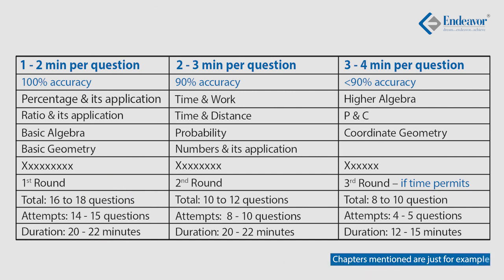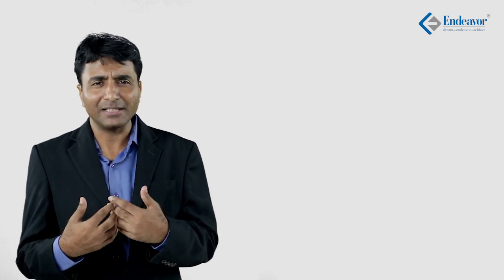Prepare a table where the first column lists all chapters and questions where you have been consistently scoring in your last 5 mocks and are able to get them correct within 1 to 2 minutes. For example, areas like percentage and its applications, ratio and its applications, averages, basic geometry, and mensuration — most students get these correct within 1 to 2 minutes. These chapters are generally classified as easy. You will find approximately 14 to 16 questions which you are consistently getting correct across almost all mocks and within 1 to 1.5 minutes.